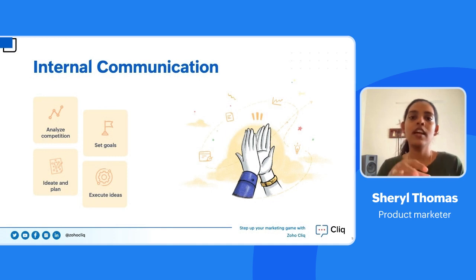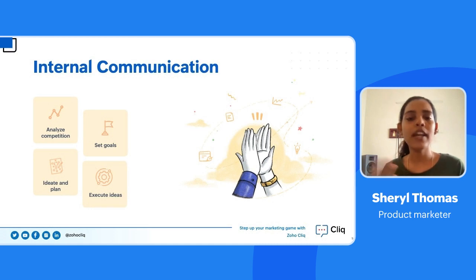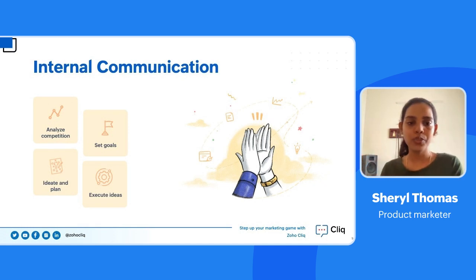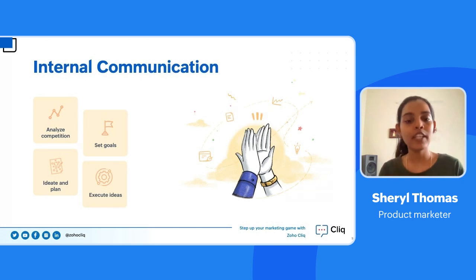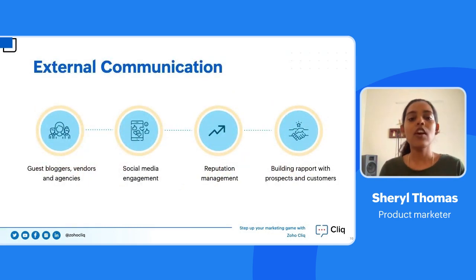Once goals are set, you need to ideate, plan, and strategize on how to implement your ideas. This could involve working on a content calendar or a product release checklist. Finally, you need to execute your plans — all the planning should lead to proper execution. To arrive at this stage, you need to communicate repeatedly with your team to ensure everyone stays on the same page and puts out a unified message.